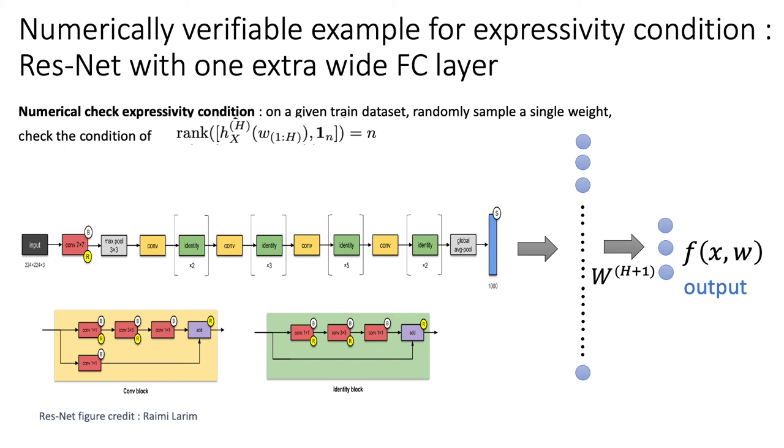We are able to also numerically verify expressivity condition for ResNet with an extra wide fully connected layer. By numerically check, I mean for a given dataset like CIFAR-10, we can randomly sample a single weight and check whether it satisfies the expressivity condition, which is a full rank condition stating that the span of the last hidden layer h and 1 is having the rank of the number of training data size.